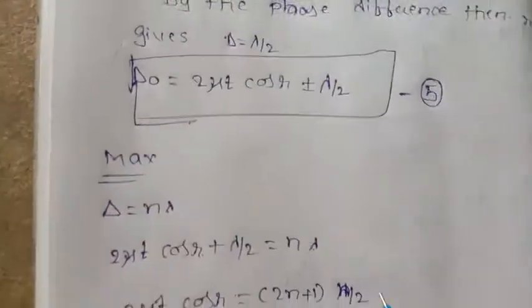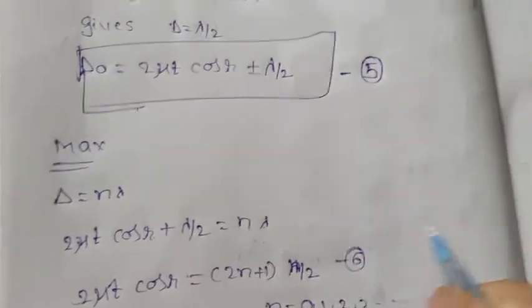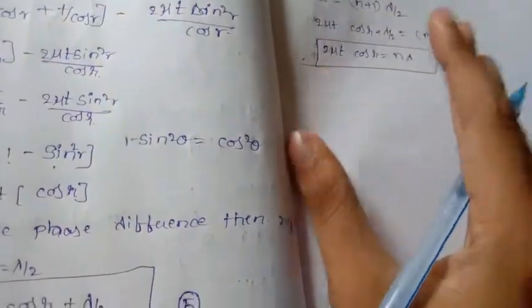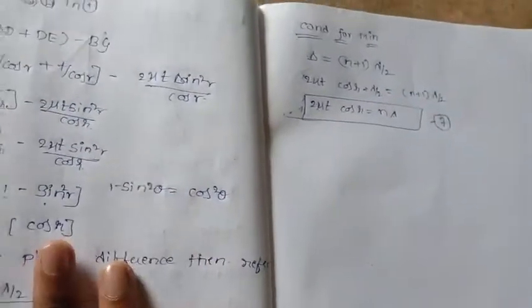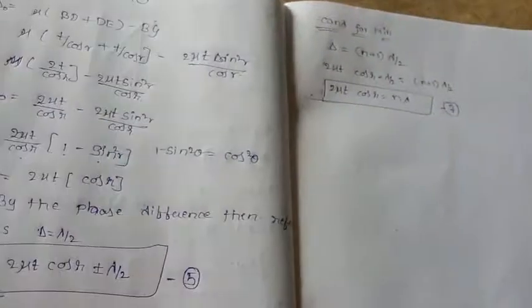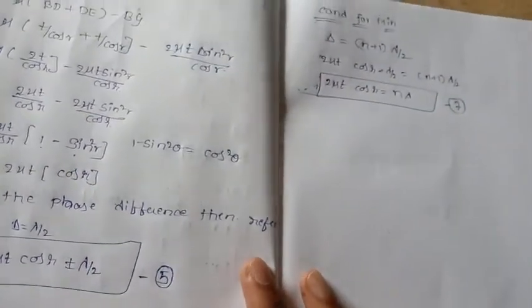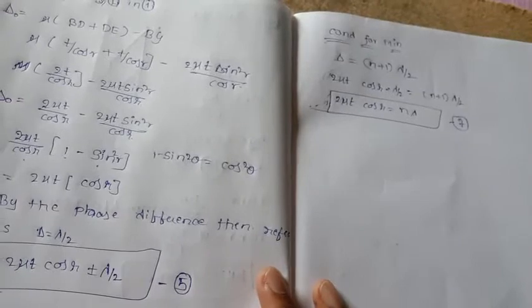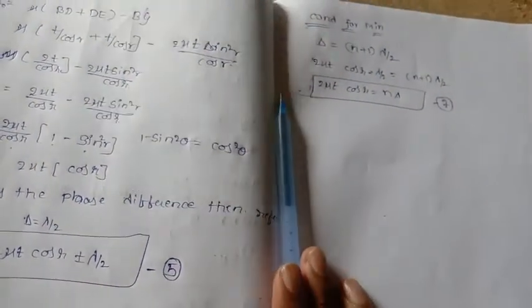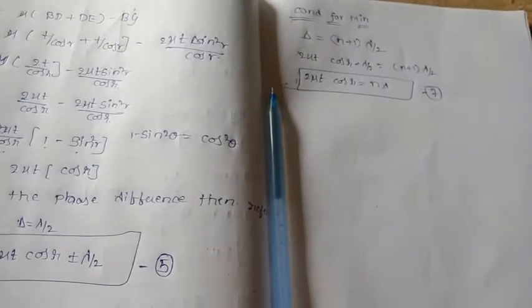This is equation number six and this is equation number seven. This is the end of the section. If you have any doubts and queries, please comment in the below section. I will feel very happy to clear the doubts. Thank you for watching.